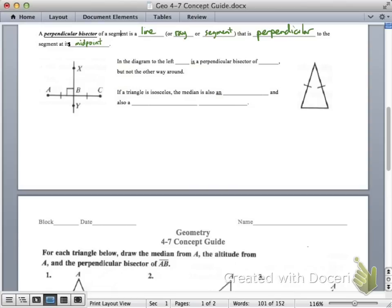Now, we're not necessarily talking about triangles, but there's a reason why it shows up at this point in time. The diagram to the left, segment AC is a perpendicular bisector of segment XY, but not the other way around. And you can see that because of the segments AB and BC that are congruent.